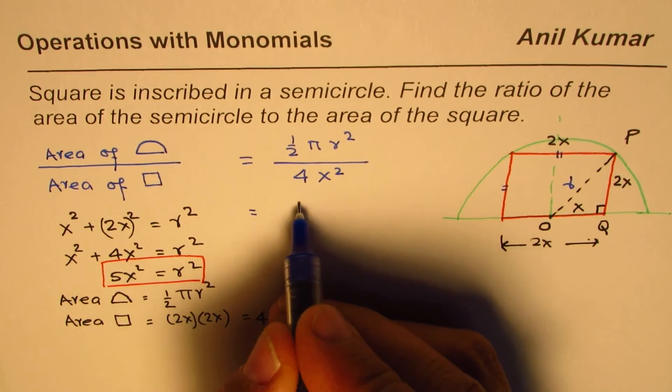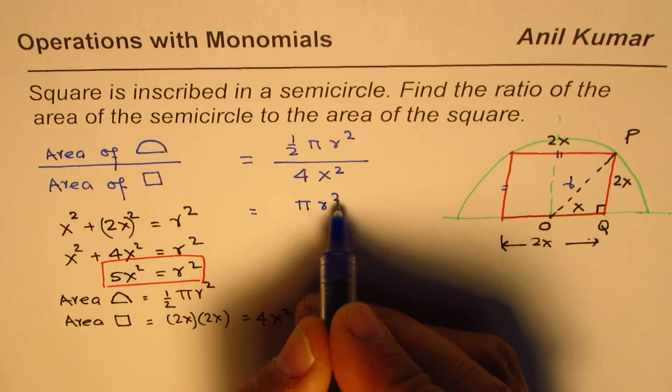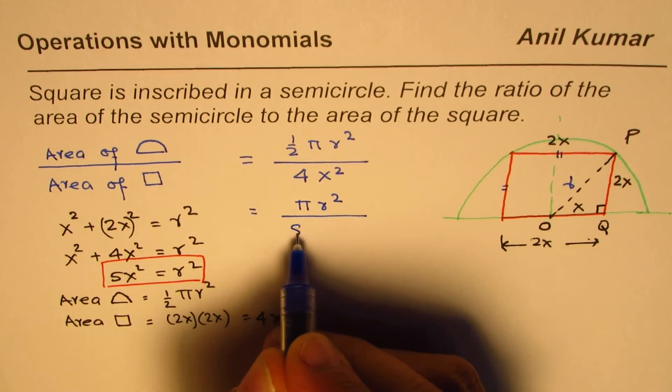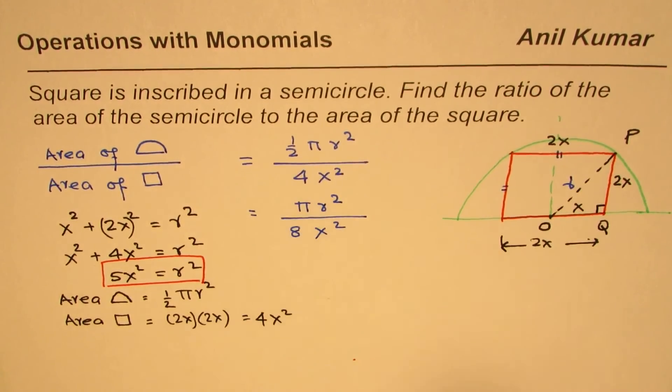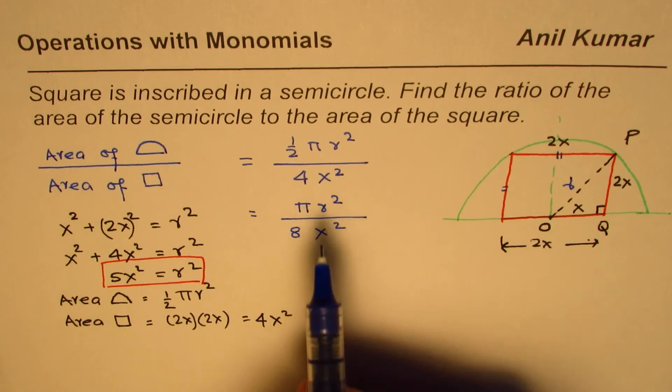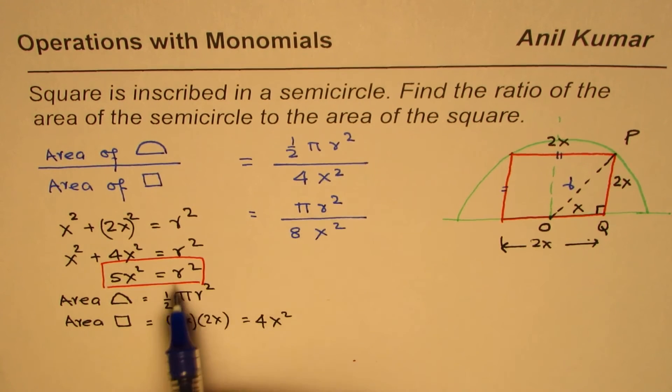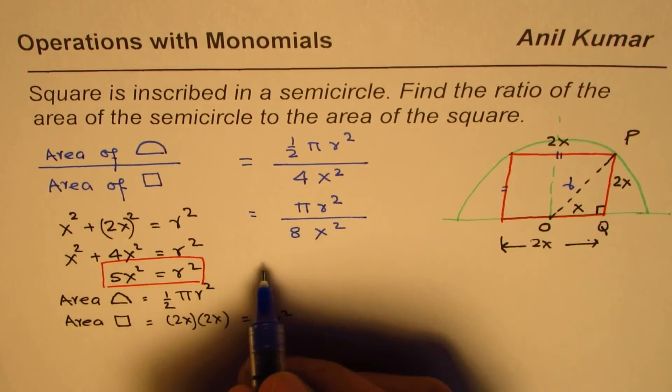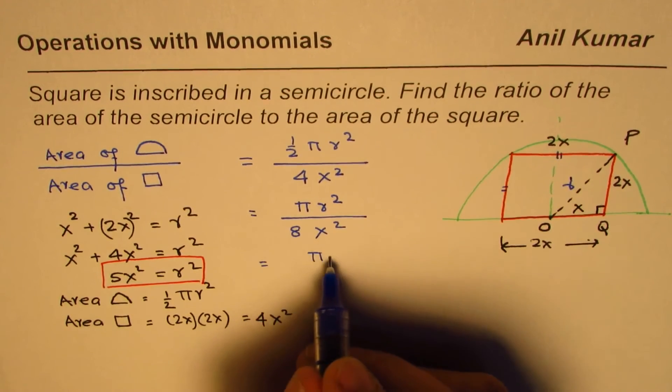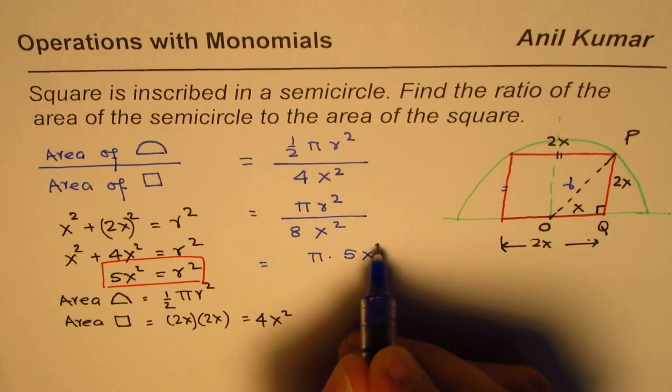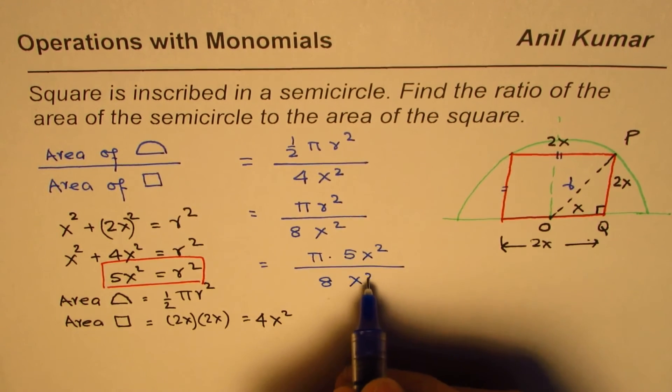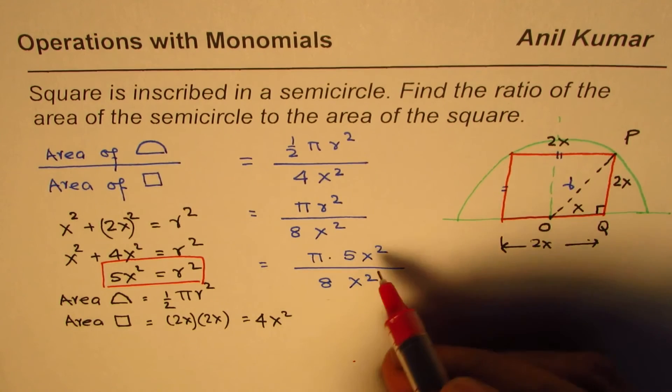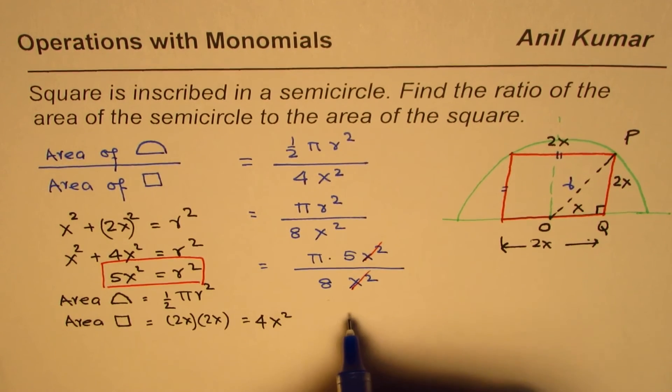Let me first simplify a bit more. Half can be written in the denominator as—this could be written as πR² divided by 8x². We multiply the denominator by 2, so one and the same thing. Now we can replace R² with 5x². So what we get here is π times 5x² divided by 8x². x² and x² can be cancelled.